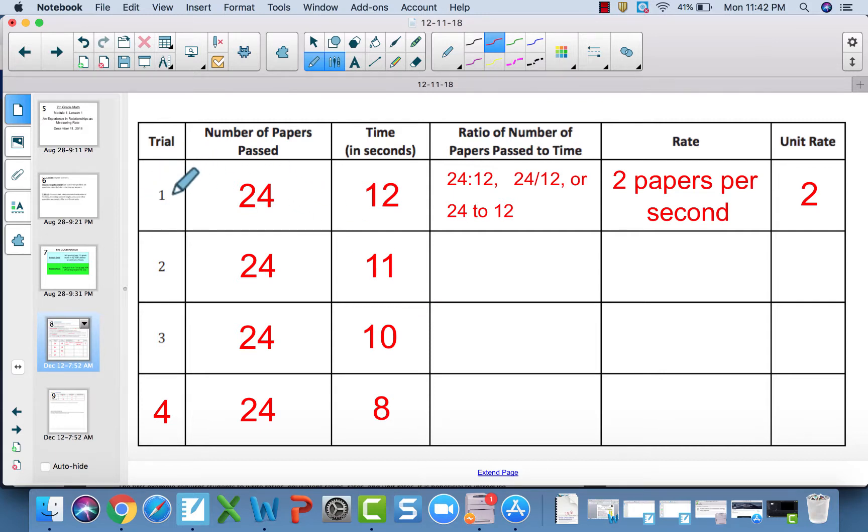Trial one, the first time, we passed out the 24 papers in 12 seconds. In this column, you're going to write the ratio in all three forms. The ratio is papers passed to time. The number of papers passed needs to come first and the time needs to come second. In this column, you're going to calculate the rate - the unit rate with the label. Here, because we passed 24 papers in 12 seconds, you divide to find the unit rate and you can pass out two papers per second. The unit rate is just that numerical amount, which is two.